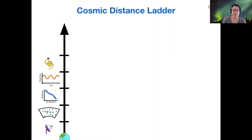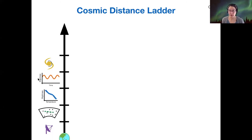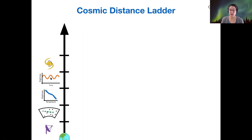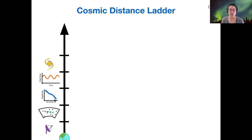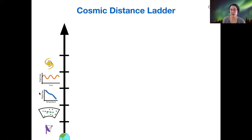All of these methods — Tully-Fisher, the variable star method, and the spectral parallax method — share a key feature: we use an independent measurement to get the luminosity. For the Tully-Fisher relation, that independent measurement is the rotation speed, which gives us the mass, which gives us the luminosity. For variable stars, it was the period of variation that gave us the luminosity. And for spectral parallax, it's the spectral class of the star that gives us the luminosity. All these methods still require measuring the apparent brightness before we can calculate distance using the inverse square law.